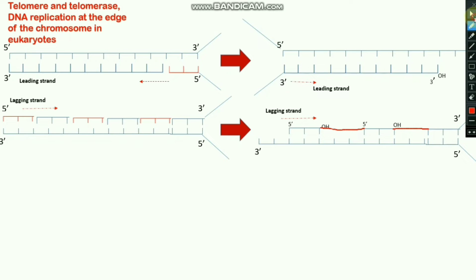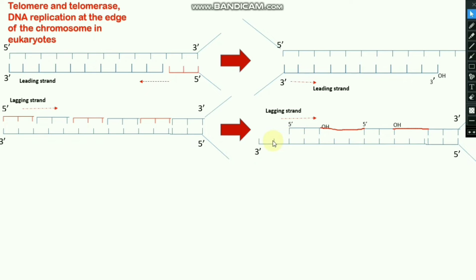But the problem arises at the 3' end. As you see here, this is the 5' end, so there is no OH group, and DNA polymerase will not add nucleotides at this part or polymerize this fragment because this is the 5' end. This is why an overhang region always forms in the lagging strand at the 3' region — this is known as the overhang region.